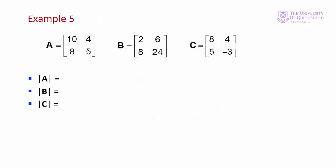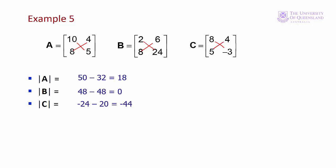Here are some examples with 2x2 matrices. For (a): 10 times 5 minus 8 times 4 equals 18. For (b): 2 times 24 minus 8 times 6 equals zero. For (c): 8 times minus 3 minus 5 times 4 equals minus 44. So matrix (b) is singular. Notice that row 2 is 4 times row 1 — we could subtract 4 times row 1 from row 2 and end up with two zeros in row 2.